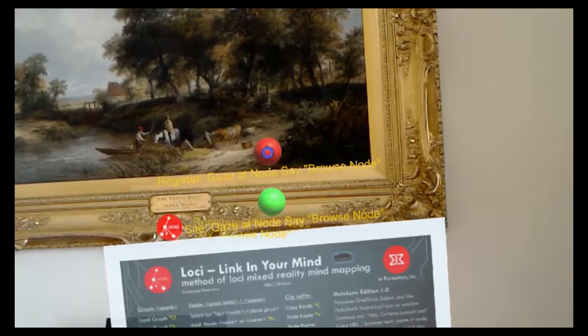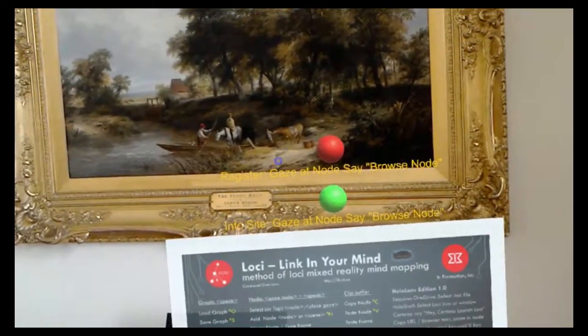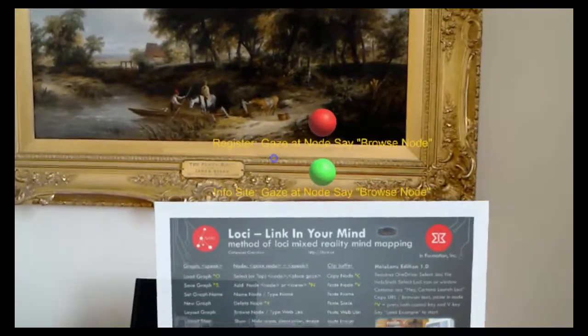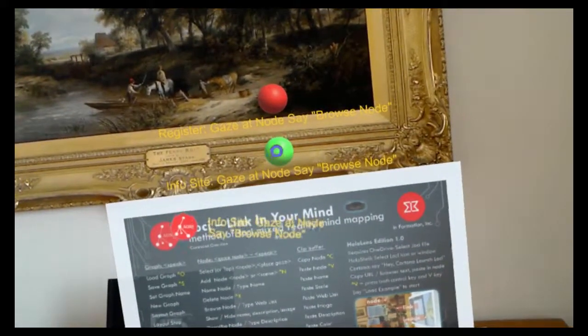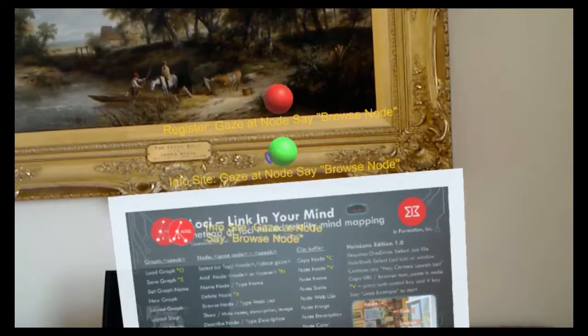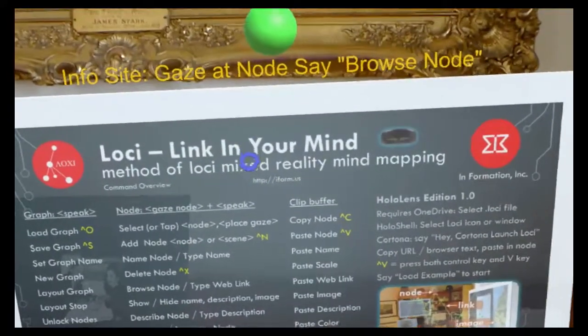The red node is one that's used to register. It'll take you out to a website with Microsoft Edge to register. And the green node is our website for the whole system, which is this URL right here.